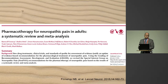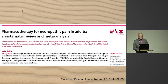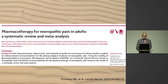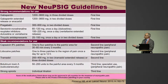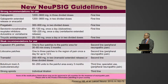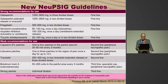If you have more time, you can follow the guidelines heavily influenced by Scandinavian authors including Nana Finnerup as key author in Lancet Neurology. The pharmacotherapy summary from the Special Interest Group on Neuropathic Pain of the IASP identifies three first-line treatments: gabapentin/pregabalin (alpha-2-delta ligands), SNRIs (duloxetine, venlafaxine), or tricyclic antidepressants (amitriptyline, nortriptyline).